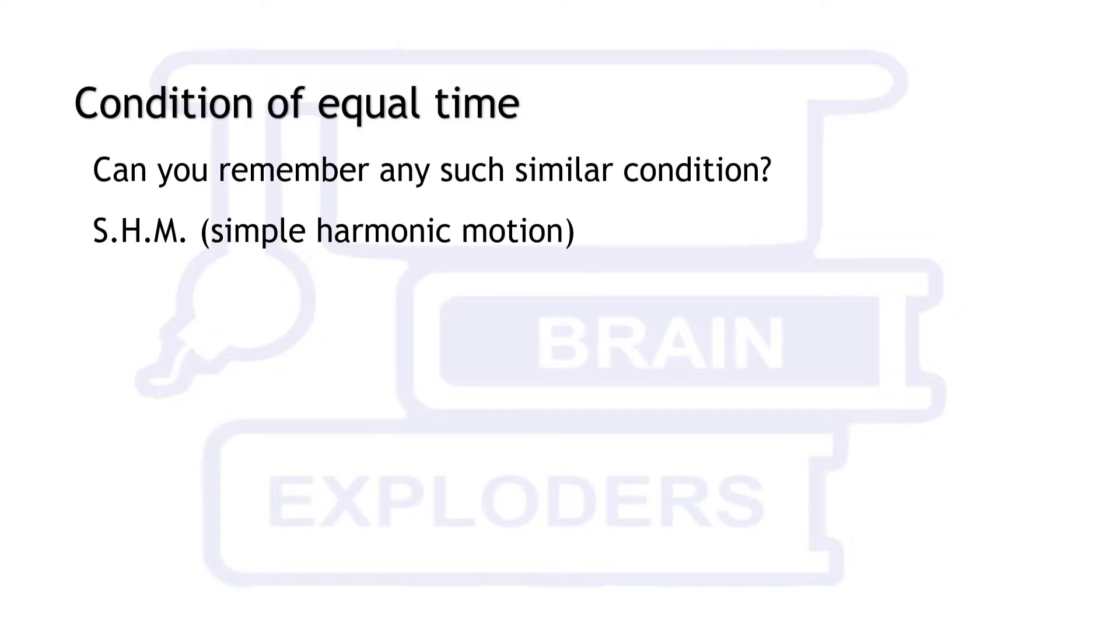SHM is the to and from motion performed by that object on which a force is acting directed towards a fixed point and is directly proportional to the distance between that fixed point and object.